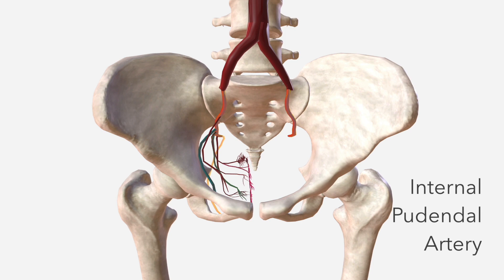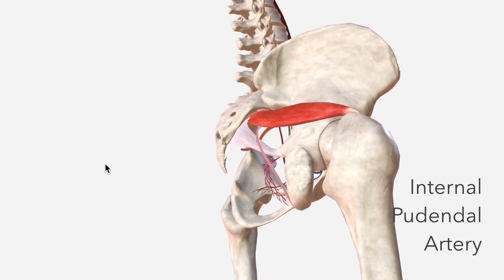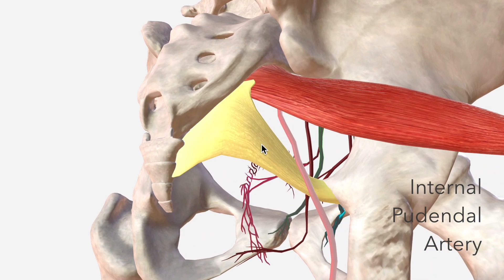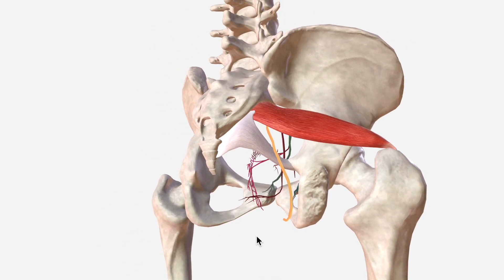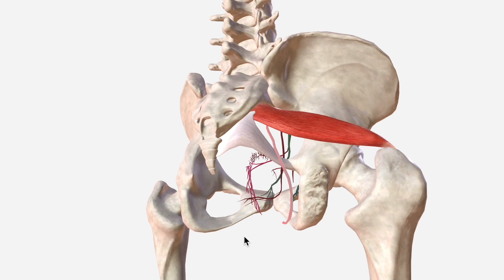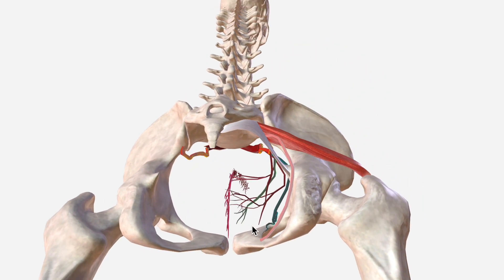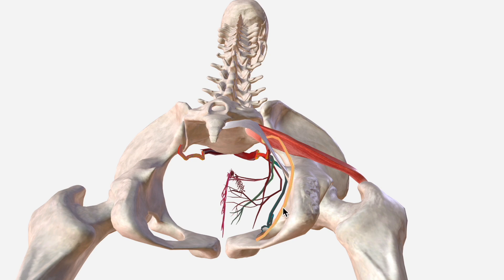Next, we have the internal pudendal artery, which initially traverses the piriformis muscle before passing through the greater sciatic foramen to exit the pelvis. The greater sciatic foramen is the space superior to the sacrospinous ligament, and through this the internal pudendal artery passes. It then passes inferiorly to supply the perineum, including the external genitalia. That's the internal pudendal artery there.